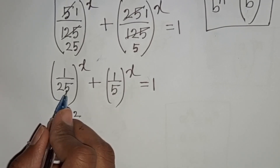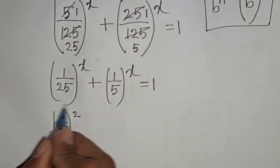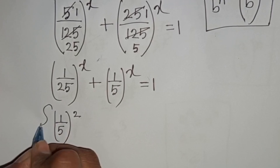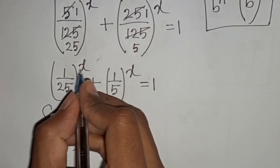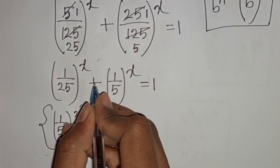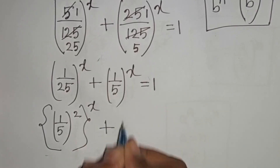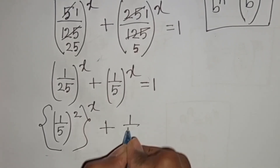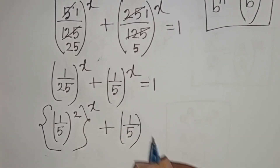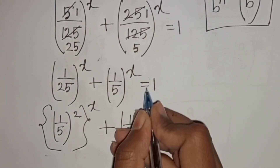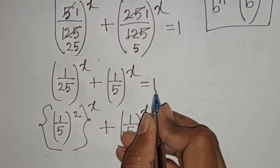Since 5 squared is the same as 25, this first bracket can be written as (1 by 5) bracket power 2, then the whole thing raised to power x. Plus (1 by 5) bracket power x is equal to 1.